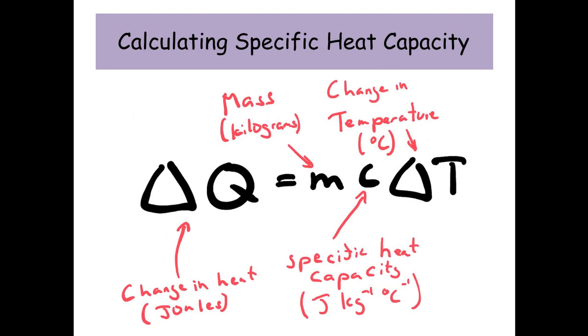To calculate specific heat capacity, this is the equation on your IGCSE syllabus. Starting with delta Q - delta Q means a change in energy, specifically a change in heat energy, measured in joules. M is the mass of your substance, measured in kilograms.